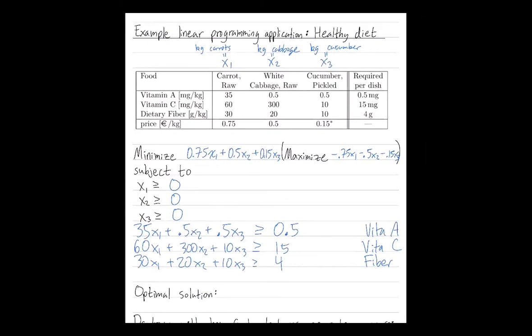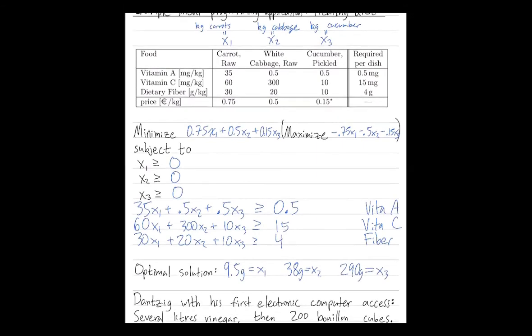We won't solve this today, but I'll tell you the solution. The solution is we're going to write these amounts of carrots, cabbage, and cucumbers in grams instead of kilograms, but whatever. So the optimal solution is 9.5 grams of carrots, cabbage will be 38 grams, and pickled cucumbers will be 290 grams per dish. And the cost of this is 0.07 euros. So we're doing so pretty cheaply. Those numbers are all rounded.